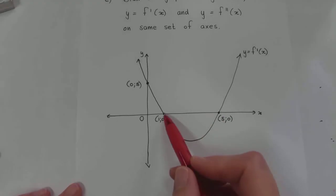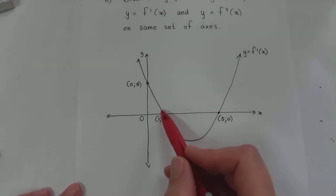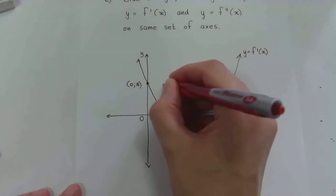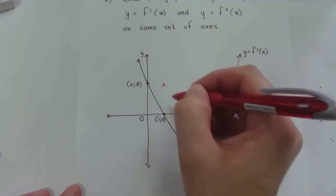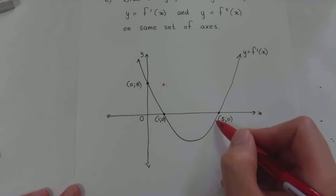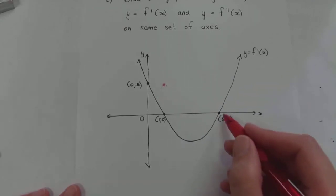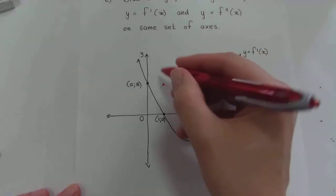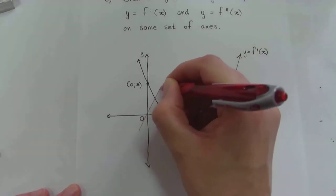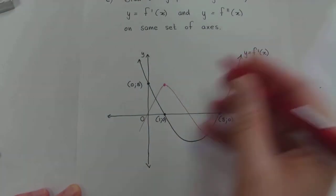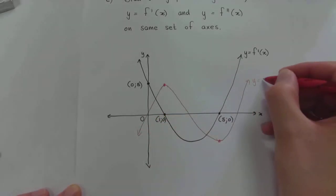First, go to the x-intercepts of the first derivative graph, because those are the turning points of f(x). Just before x equals one, the gradient is positive, then becomes negative — so it's a maximum turning point. At x equals five, just before it the gradient is negative, just after it's positive — so it's a minimum turning point. If you connect those two turning points, you get a rough sketch of f(x). Since the first derivative is a parabola, the original function is a cubic graph.